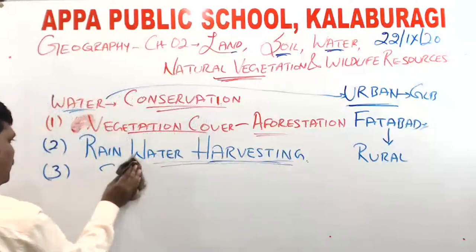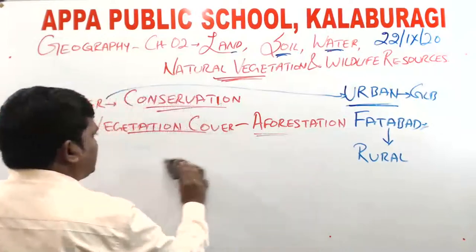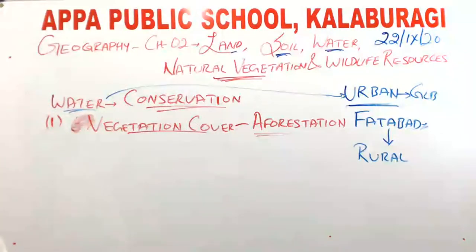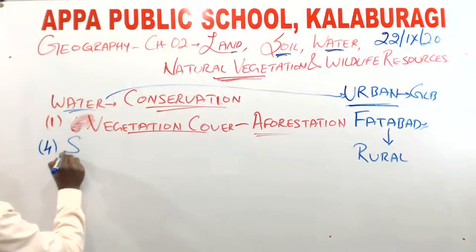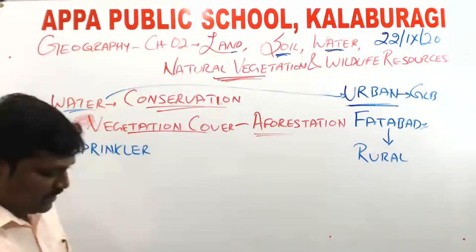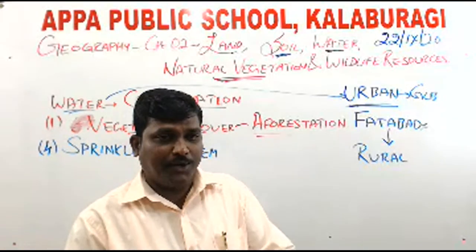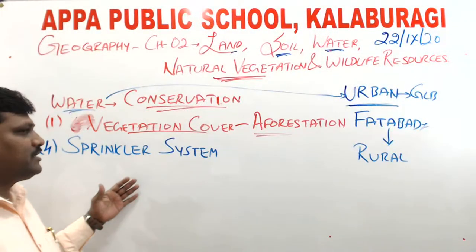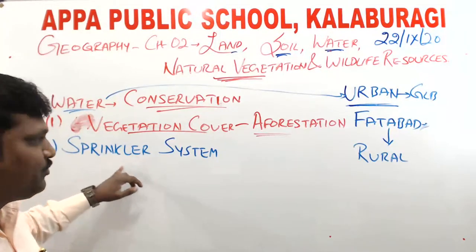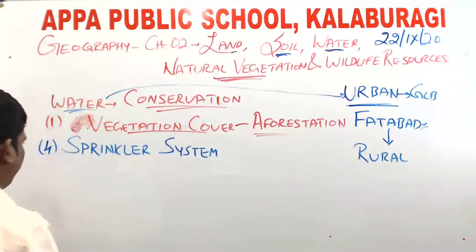The next method is the sprinkler system. You may be familiar with sprinklers used in gardens. In the agriculture field, sprinklers come up and spread water across the crops, but with minimum water loss.